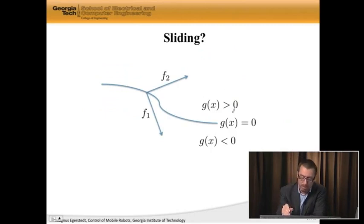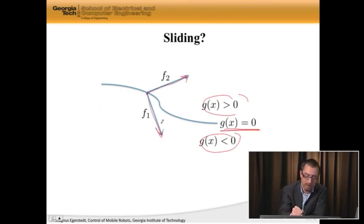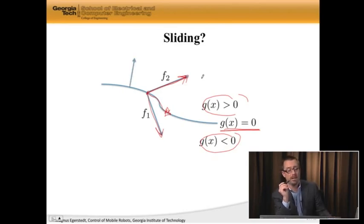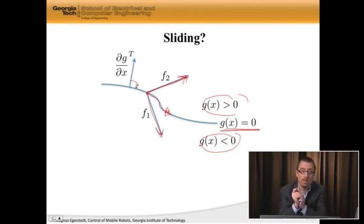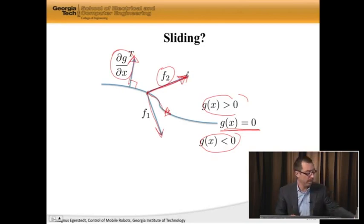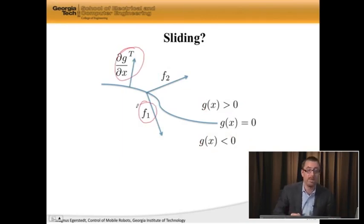I have g positive on one side, g negative on the other side, and the switching surface is g equal to zero. f2 wants to drive me in one direction and f1 wants to drive me in another. I want to slide along the surface — that should be the right solution. The condition for sliding: f2 needs to point in the positive direction of g. I find a vector normal to the switching surface, which is the gradient — the partial derivative of g with respect to x, transposed. I take the inner product of this with f1 and with f2. If the inner product with f2 is positive, they point in the same direction; if the inner product with f1 is negative, they point in different directions.